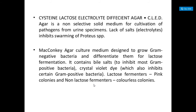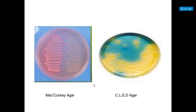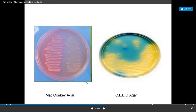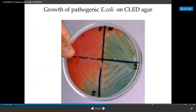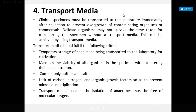If there is a presence of lactose fermenters they will produce pink color colonies; if there is a presence of non-lactose fermenters they will produce colorless colonies. This is the diagram of MacConkey's agar, this is CLED agar, and this shows the growth of pathogenic E. coli on CLED agar.